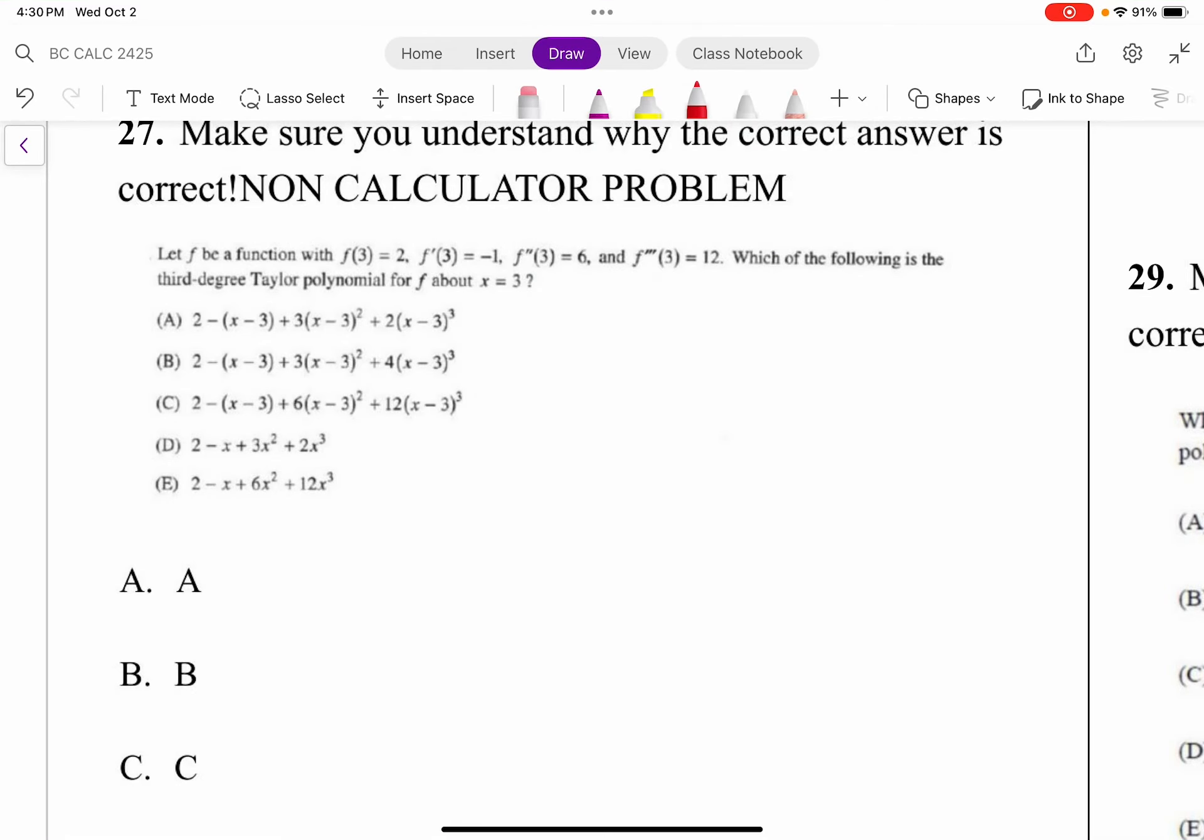Okay, this says let f be a function with f(3) = 2, f'(3) = -1, f''(3) = 6, and f'''(3) = 12. Which of the following is a third-degree Taylor polynomial for f about x = 3? All right, this isn't so bad, you just need the recipe.